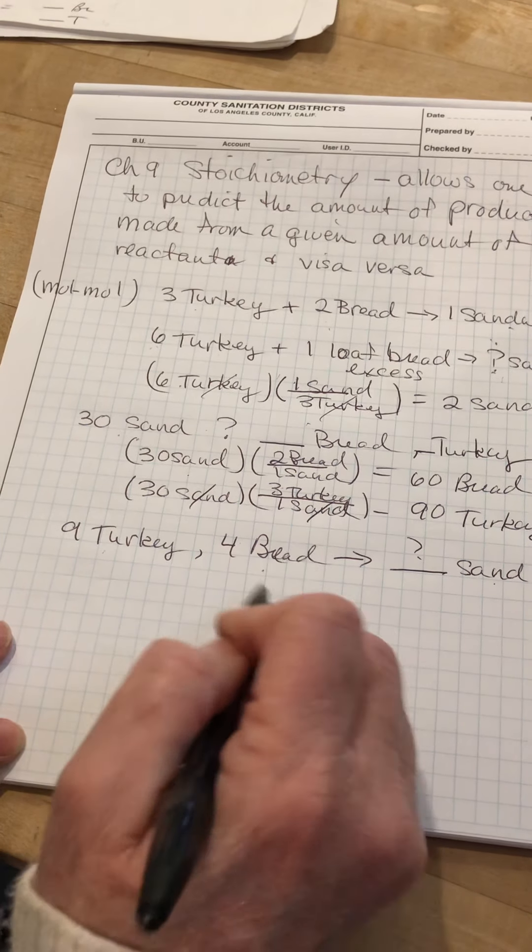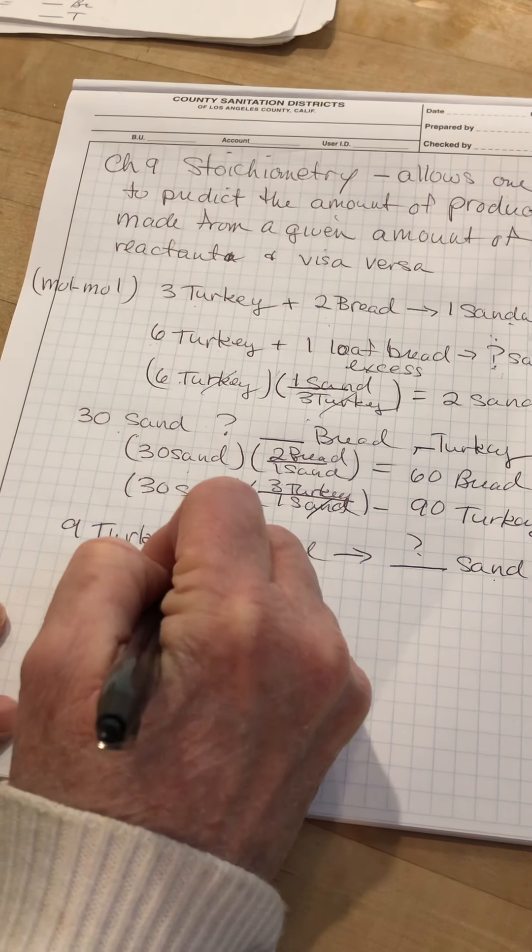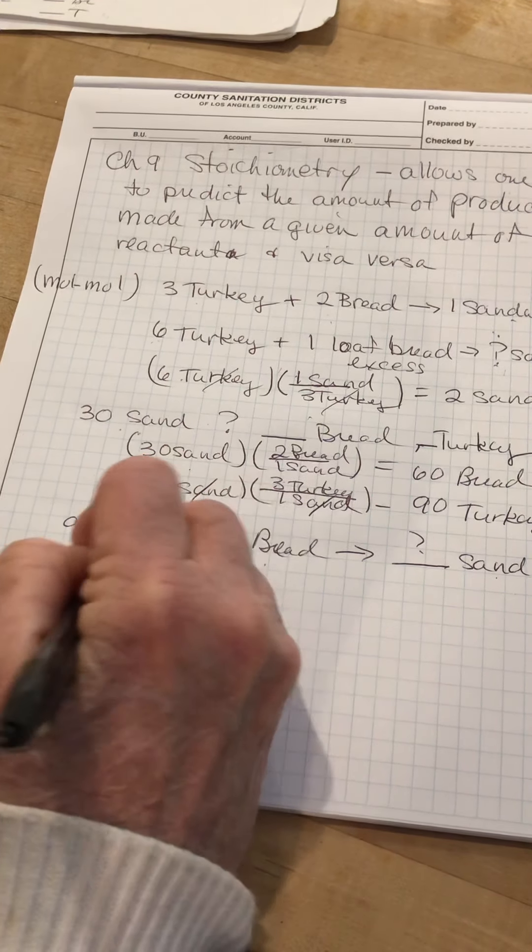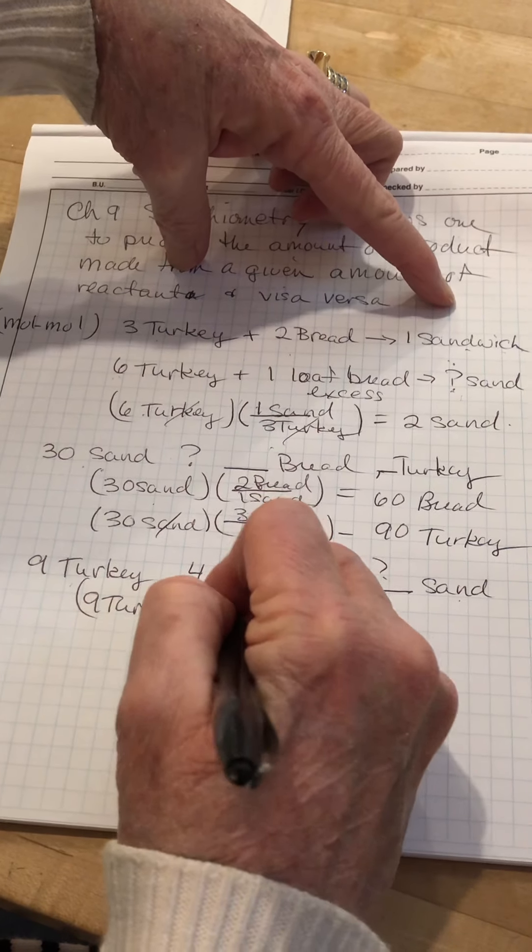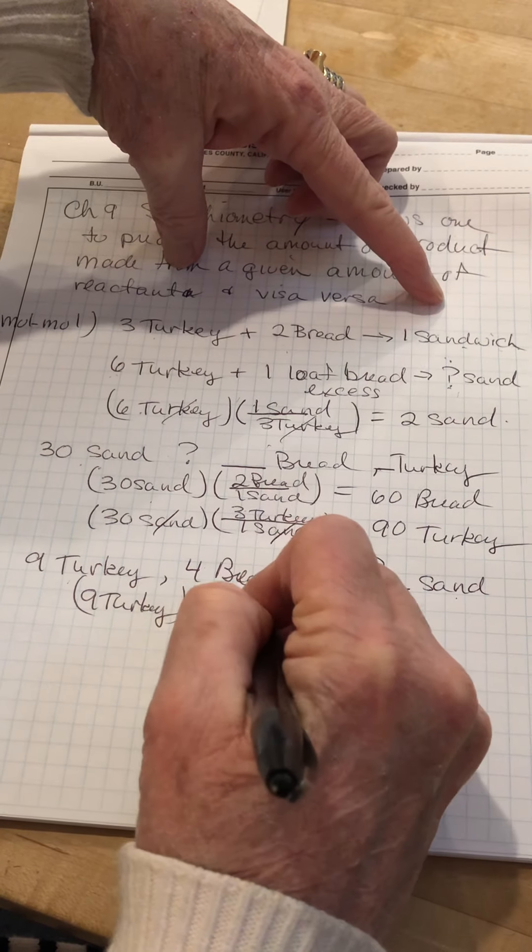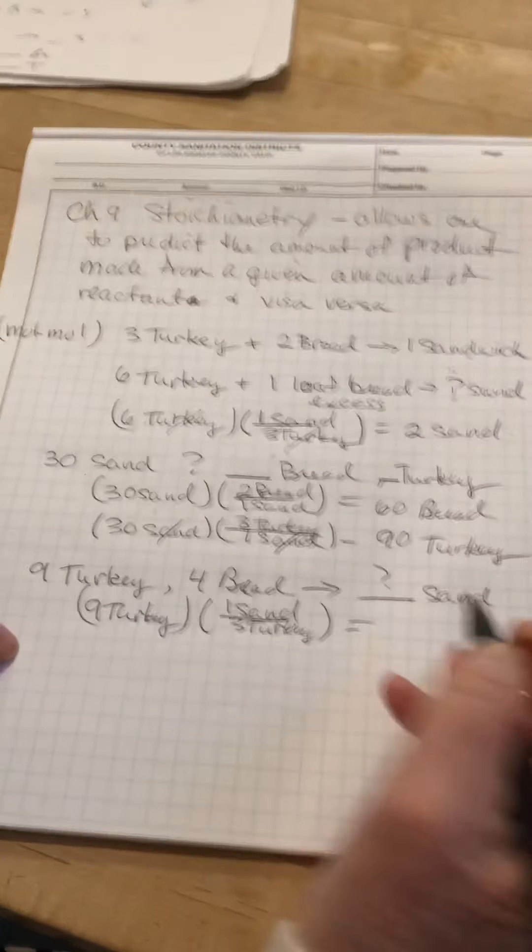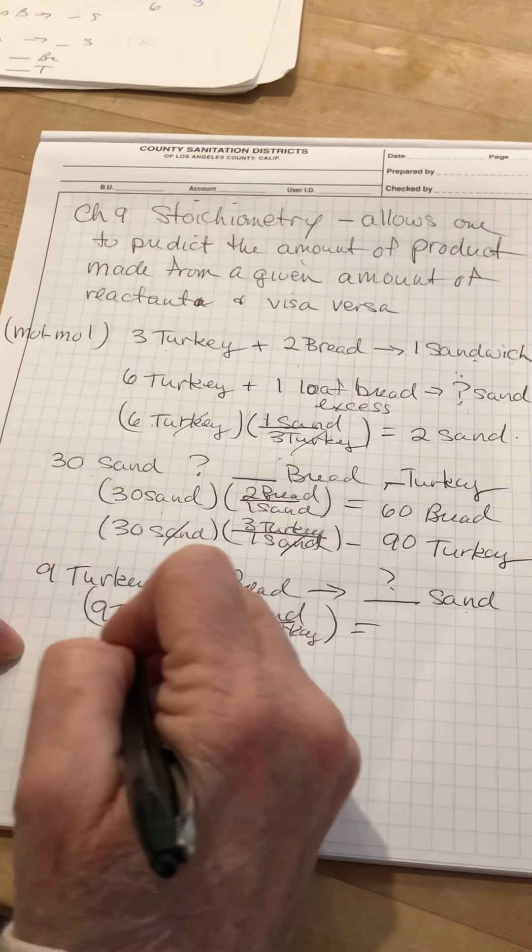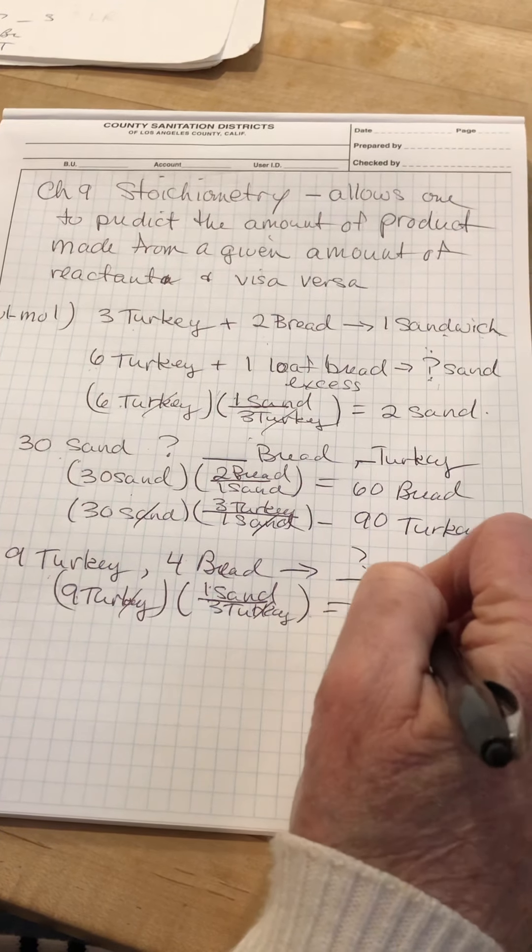Yes, I know some of you can see the answer already, and that's great. Nine turkey. Look at the balanced equation up here. Here it says we can make one sandwich for every three slices of turkey. So that gives us nine divided by three. The units will cancel. That gives us three sandwiches.